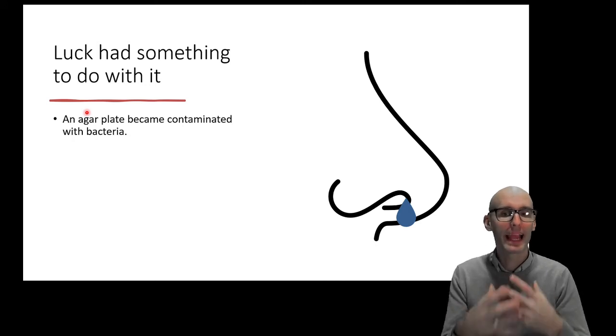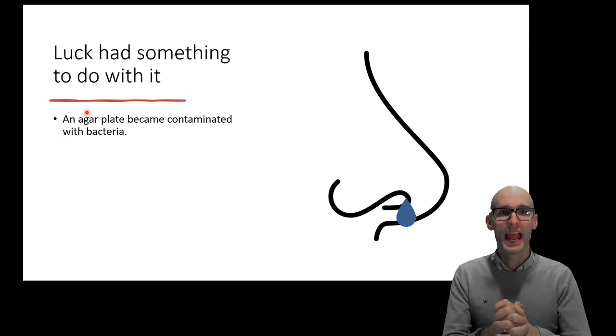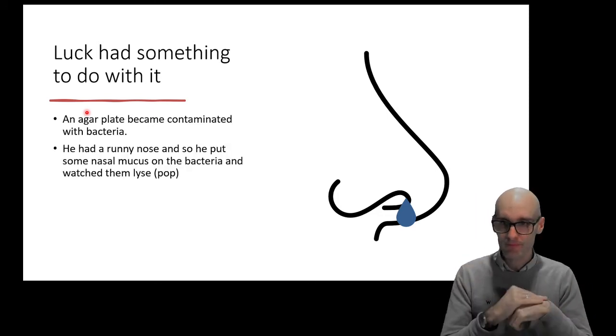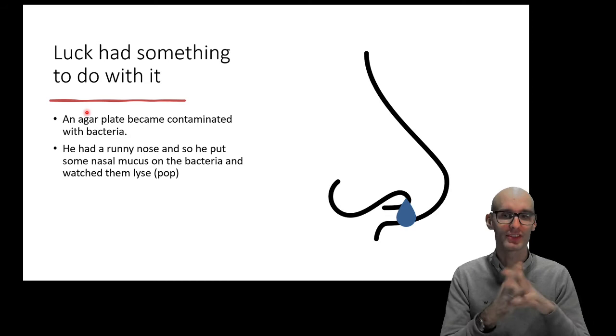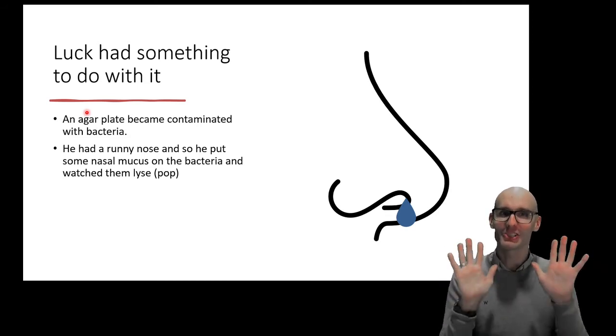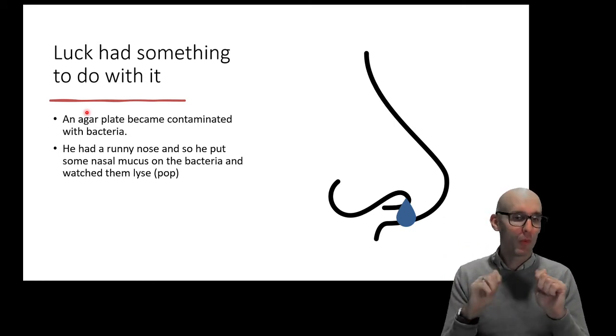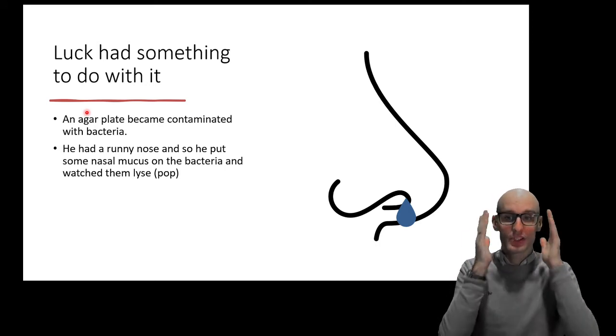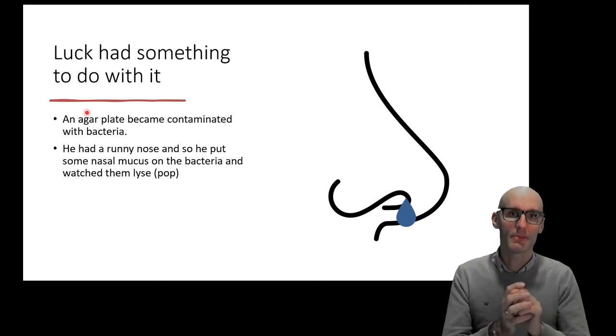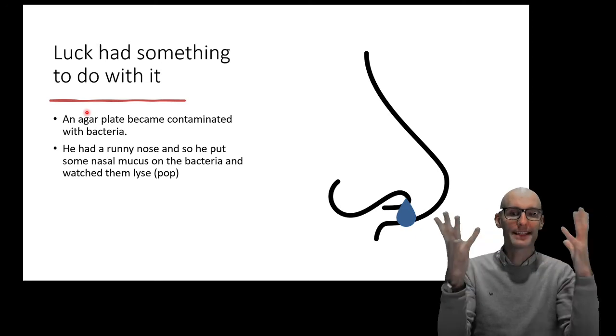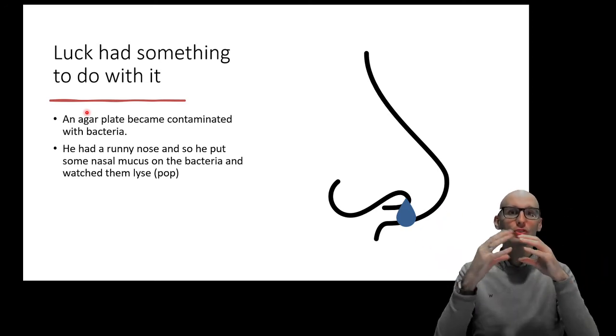Like luck had something to do with it. But you may not know the extent to which luck had something to do with it. So it started with an agar plate that Alexander Fleming was preparing. And one had become contaminated with bacteria. So he hadn't put bacteria on there. It just happened to become contaminated. And he thought, why not do something fun with it? Because it's not the culture he wanted to grow. So he had a runny nose, and he put some nasal mucus on the bacteria. Now, there are some rumors that it just dripped onto the agar plate, and we're not sure what the truth is. But he thought, well, why don't I see what's going on there? Because he noticed the bacteria were dying around the drip.